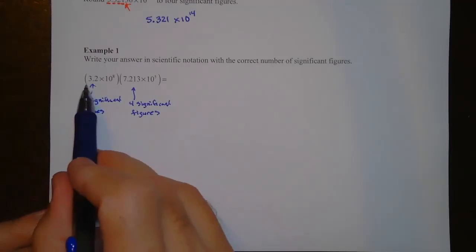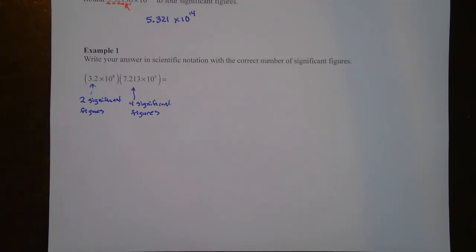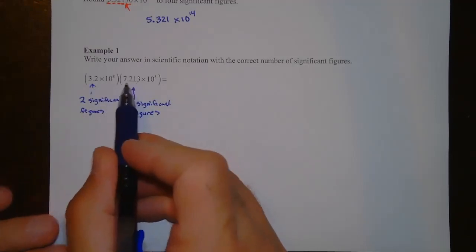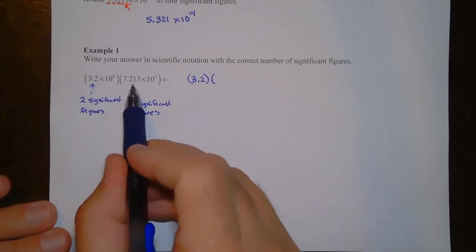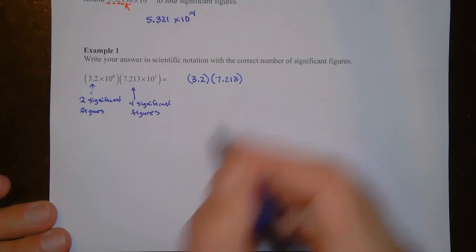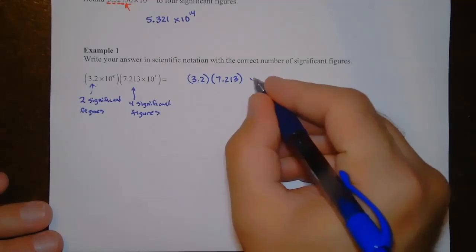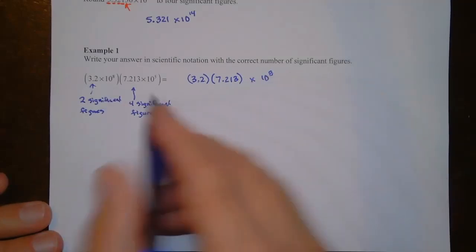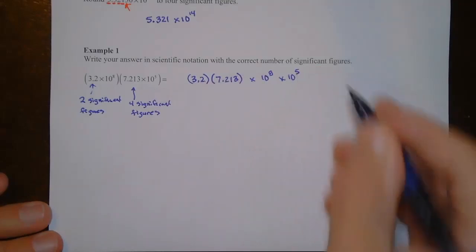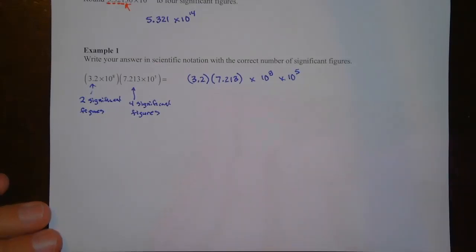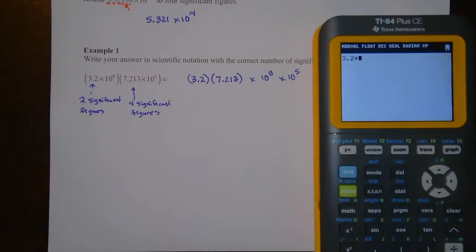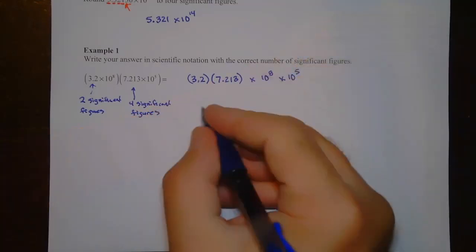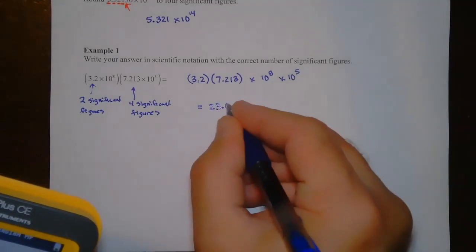To multiply scientific notation, we separate the powers of 10 from the plain decimal numbers. We multiply 3.2 times 7.213, and separately handle 10 to the 8th times 10 to the 5th. Using a calculator: 3.2 times 7.213 gives us 23.0816.